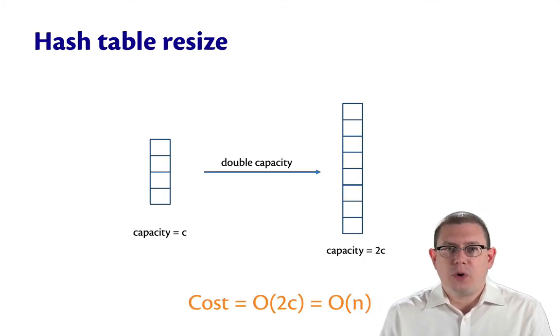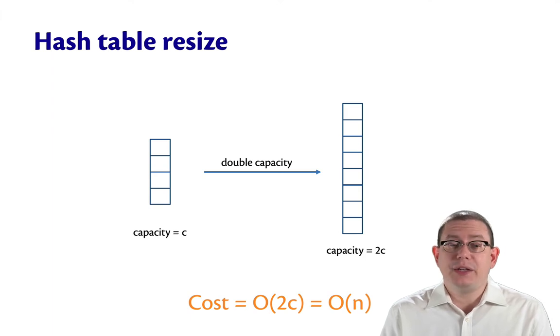Finding therefore was an efficient operation, but insertion required, from time to time, a resize operation to keep the average bucket length bounded by a constant.